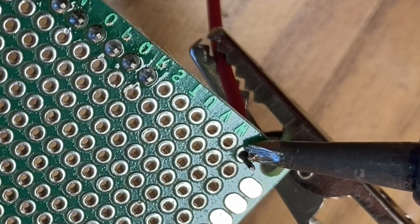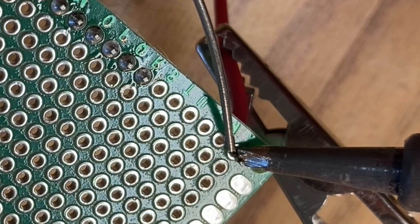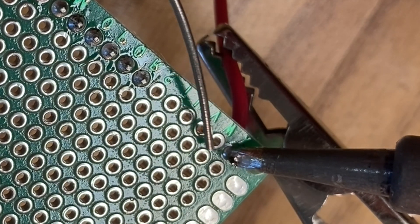Then we can touch our iron to the pad and the wire, bring in the solder, and get a nice neat joint.